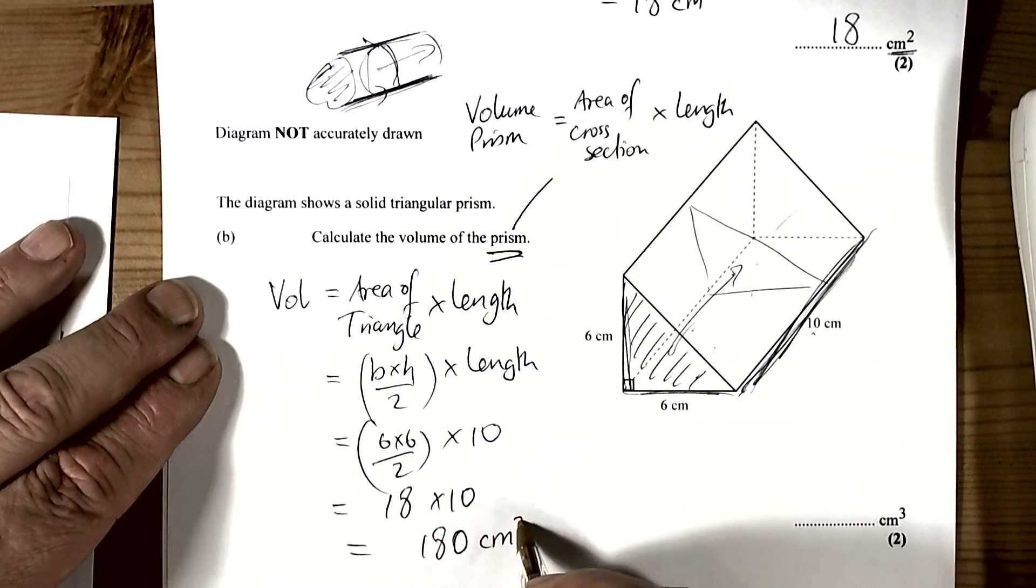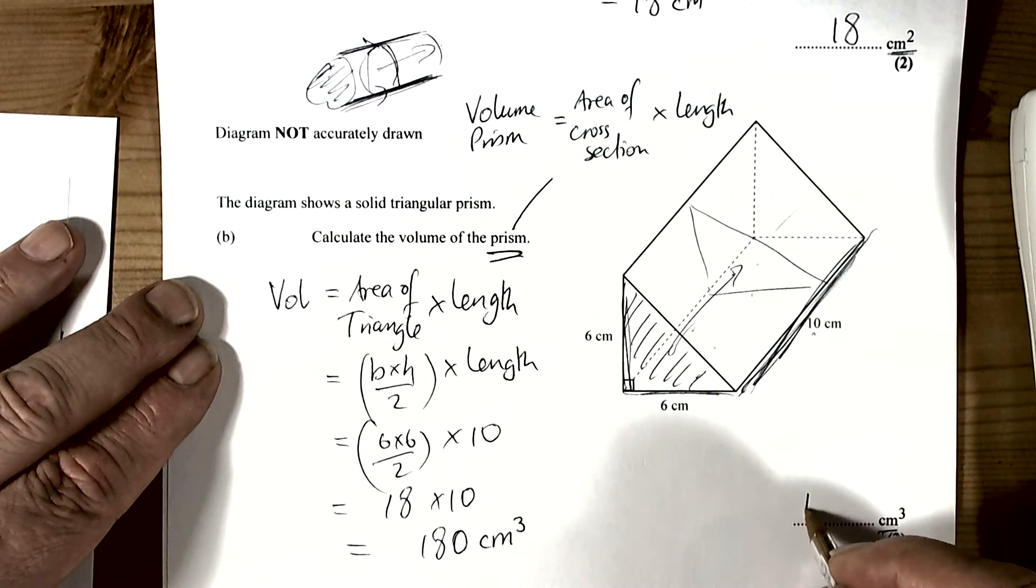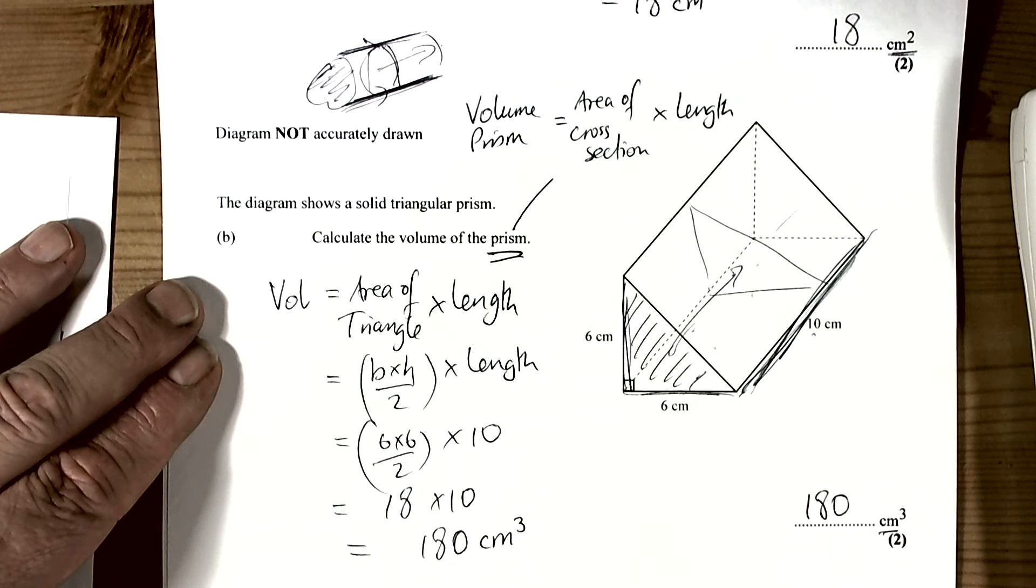So therefore the answer is going to be in cubic units, three dimensions. Again, they gave you the units in this particular question, but remember there will be questions where there won't be units, so get in the habit of writing the units down all the time when it involves measurements. So the answer to this will be 180 cubic centimetres.